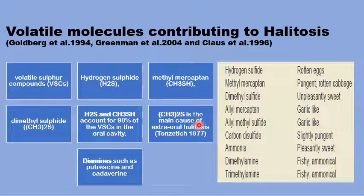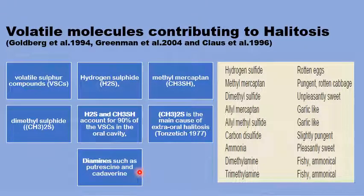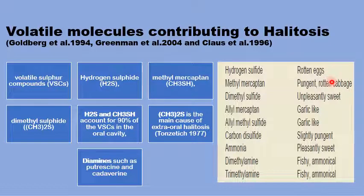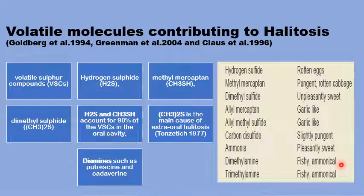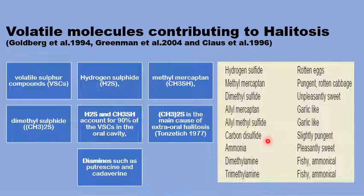But there are other compounds besides the volatile sulfur compounds that can produce a bad odor of the breath, including the diamines such as putrescine and cadaverine. These volatile compounds can produce very offensive breath odor, giving rise to odors like rotten eggs for hydrogen sulfide, or rotten cabbage for methylmercaptan, things like garlic-like odor for halimercaptan and halimethyl sulfide, and a fishy or ammoniacal odor for dimethyl amines and trimethyl amines, and a pungent odor for carbon disulfide.